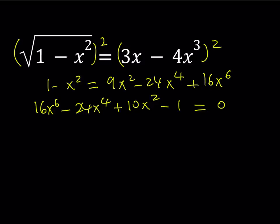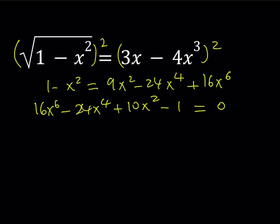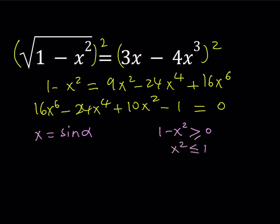Let's assume that x is equal to sin α. You might wonder how we can just assume that. Well, sin α is between negative 1 and positive 1 inclusive, and if you look at this equation carefully, the domain gives us pretty much the same thing. Since 1 minus x squared must be greater or equal to 0, we get x squared ≤ 1, meaning the absolute value of x is ≤ 1. So x is between negative 1 and positive 1, which perfectly fits with sin α.